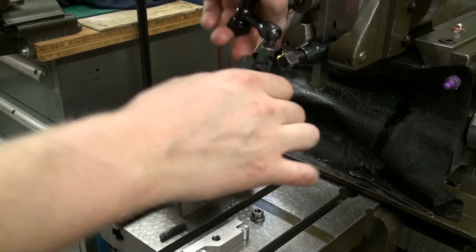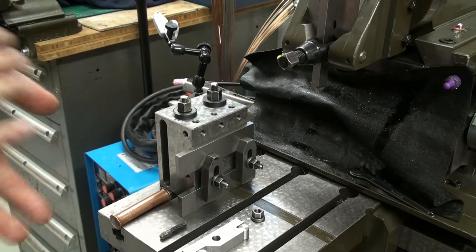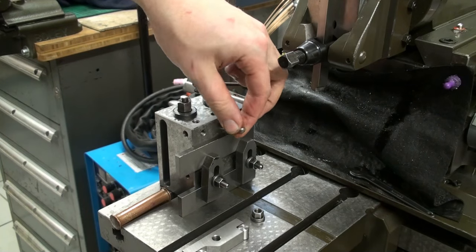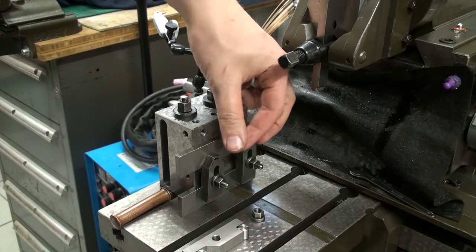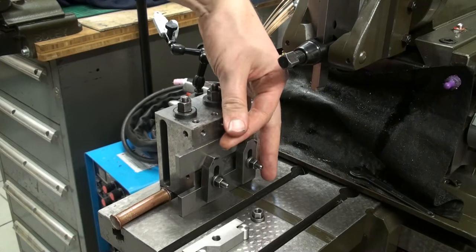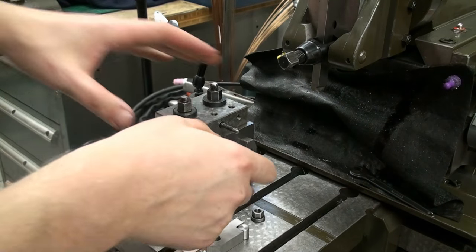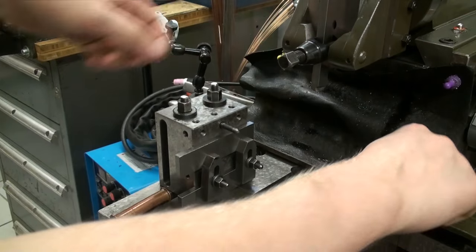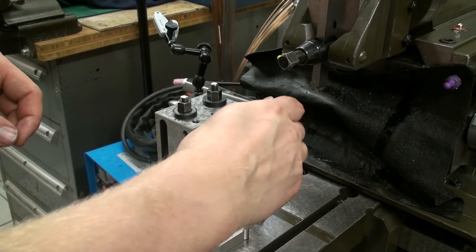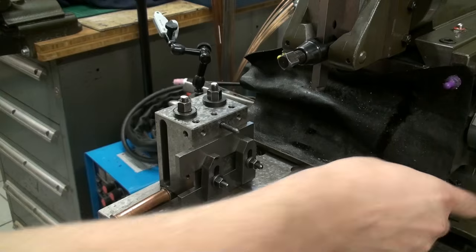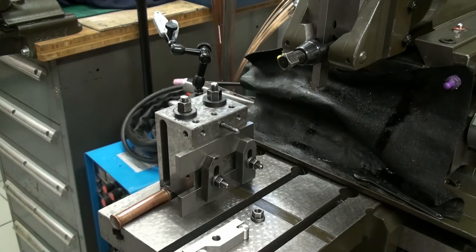Now we can remove the dial indicator. Use a short six millimeter stud, screws into the toolmakers block. Make sure the face of this is clean and also make sure these are properly tightened down. Make sure the face of this parallel is clean.